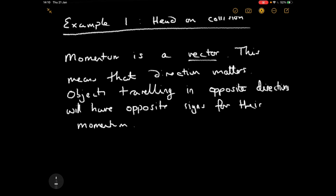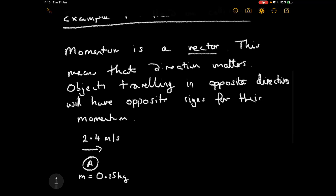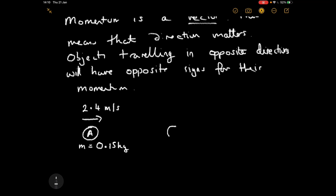Let's work through this example. We've got object A moving in one direction with a mass of 0.15 kilograms and a velocity of 2.4 metres per second. It's going to collide head-on with object B, which is lighter — a mass of 0.05 kilograms — and moving in the opposite direction.